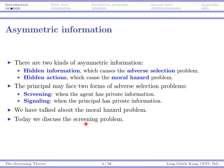Today we will only discuss the screening problem; for signaling, we will leave that discussion to the second half of this semester. By the way, you have already seen moral hazard problems — in our manufacturer-retailer examples with return contracts, the retailer's actions are non-contractable. Whenever the manufacturer cannot control or contract upon the agent's actions, there is a moral hazard problem and an incentive alignment issue. Today we will focus on the screening problem.